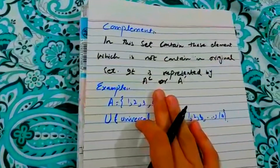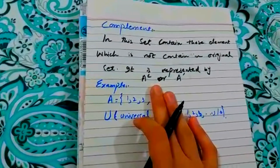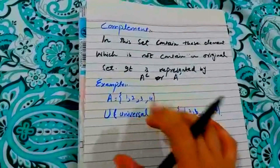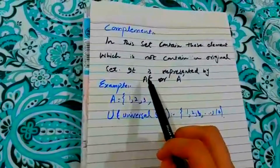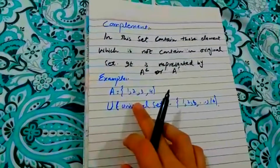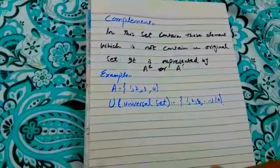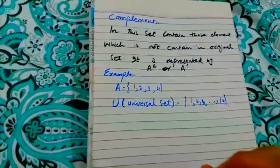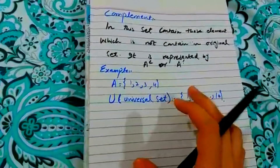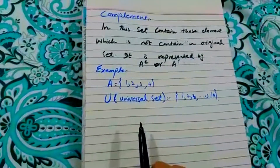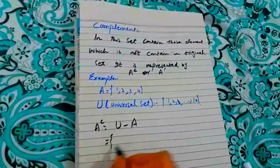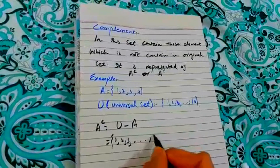What is complement? Complement is a set that contains those elements which are not contained in the original set. This is represented with a bar on top of A, or on top of C. Here is a universal set U. So A complement means U minus A. U is {1, 2, 3, ... up to 10}, and A is {1, 2, 3, 4}.